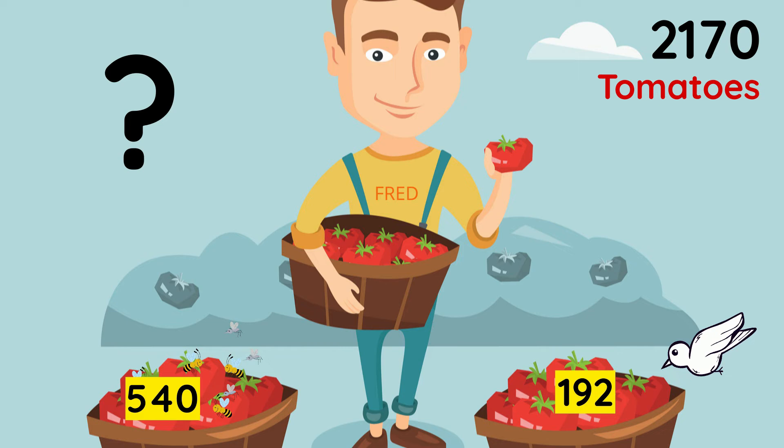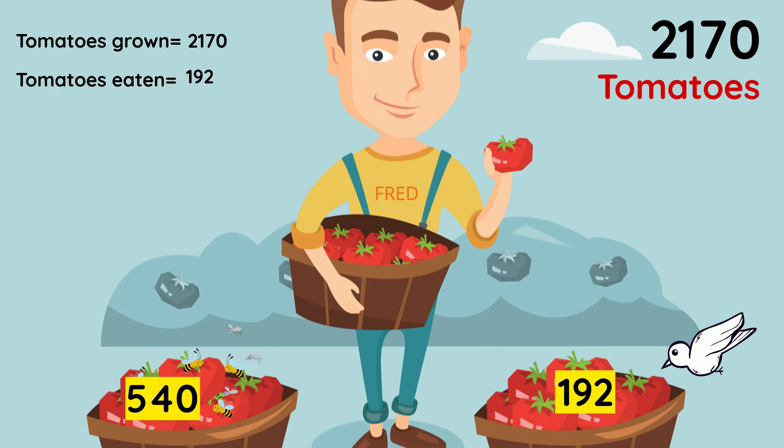Let's create a word statement to help us. Tomatoes the plant grew equal 2,170. Tomatoes the birds ate equal 192. Tomatoes the bugs destroyed equal 540. Tomato plants actually harvested. What do we have to do here?